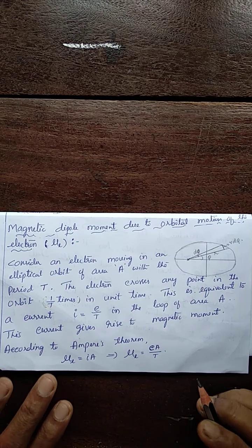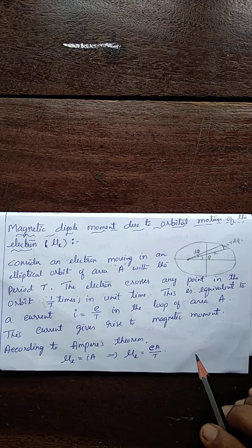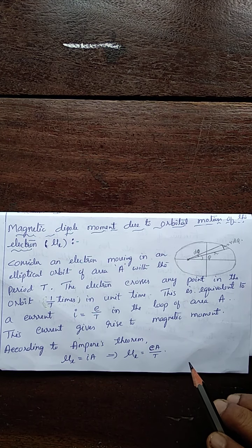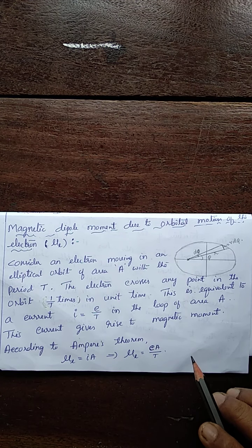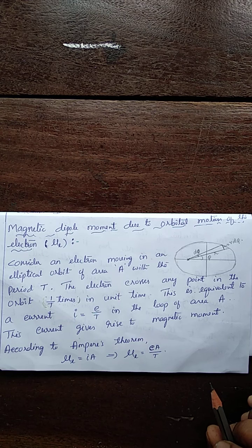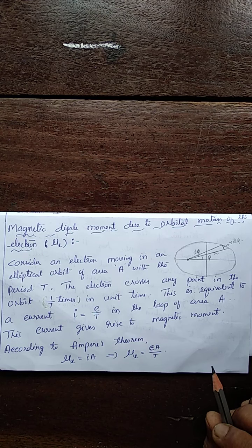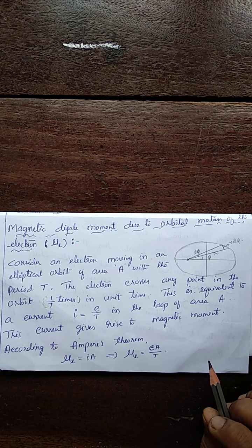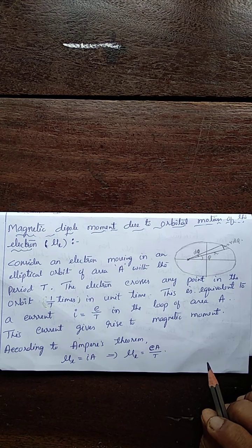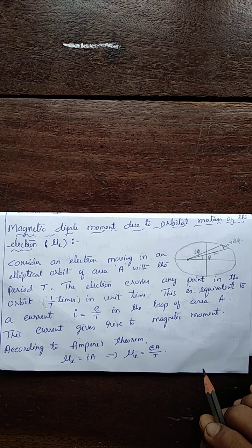Dear students, today let us derive the expression for magnetic dipole moment of the electron due to its orbital motion, due to its spinning motion, and hence the total magnetic dipole moment.